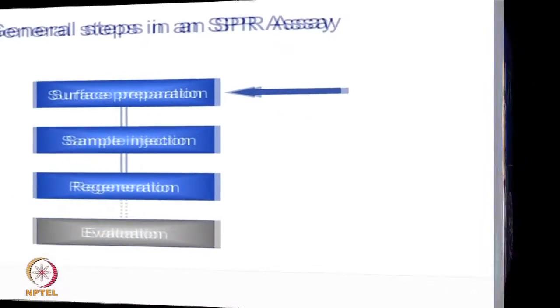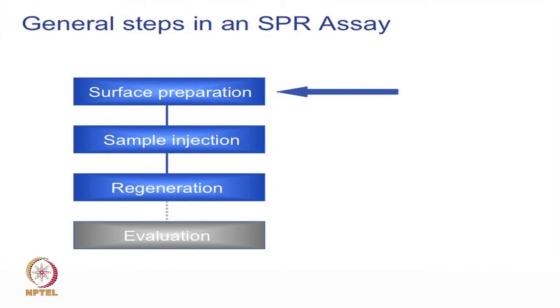The various steps involved in a Biacore assay are surface preparation, sample injection, regeneration, and evaluation. We will start with surface preparation.